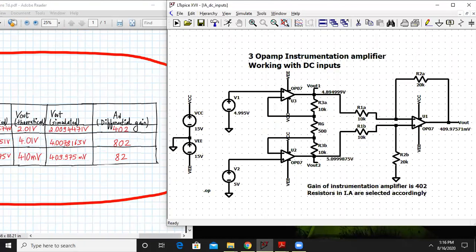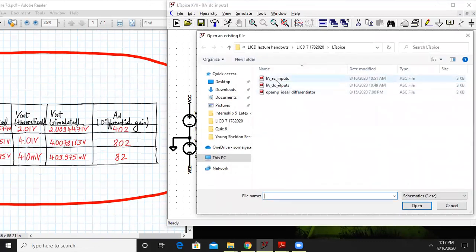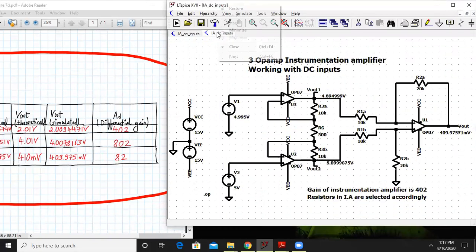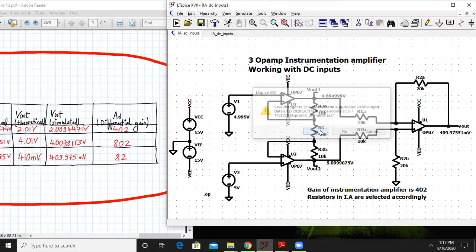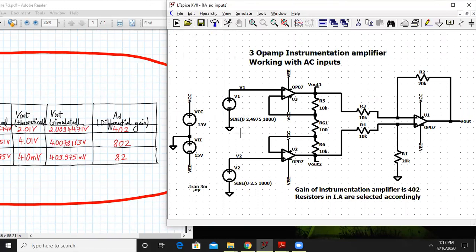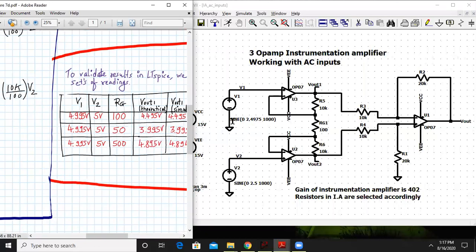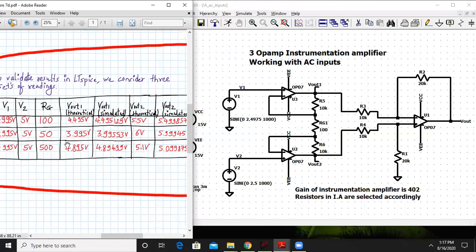So OPAMP is giving very high accuracy in the results and we have used OP07 for our analysis. This was working with DC inputs, now we can quickly check a circuit which works with AC inputs. This is my OPAMP working with AC inputs to show you that OPAMP works with AC and DC both. Here the input is 4.995 peak value, so I have divided that by 2. Similarly I've divided 5 by 2 because it gives the peak value. The gain is 100 and we are checking only the first condition.